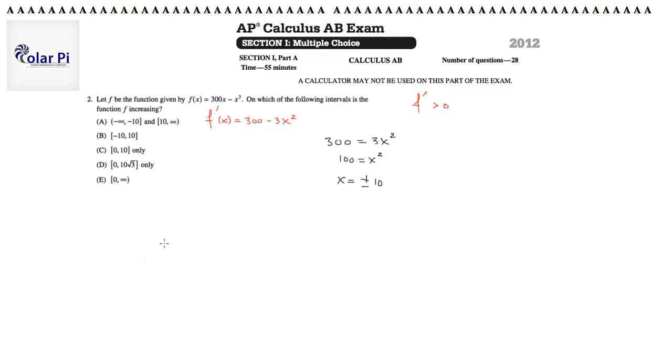So that means that we have two critical numbers, positive and negative 10. So those are places where f prime is equal to zero, in this instance.